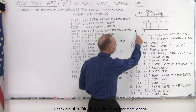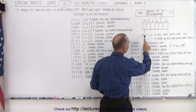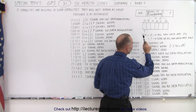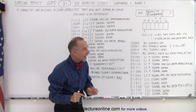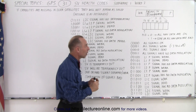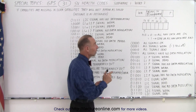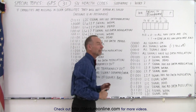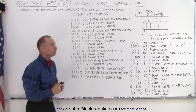We have 6 bits, and the very first bit — the most significant bit — is either set to a 0 or a 1. If it's set to 0, that means all nav data are okay. But if it's set to 1, then some or all of the navigation data are bad.